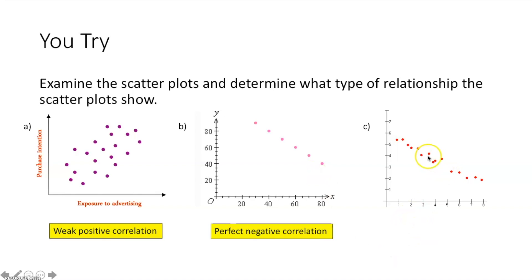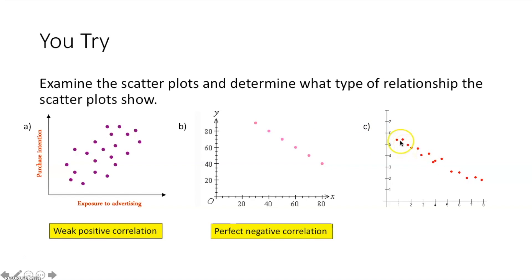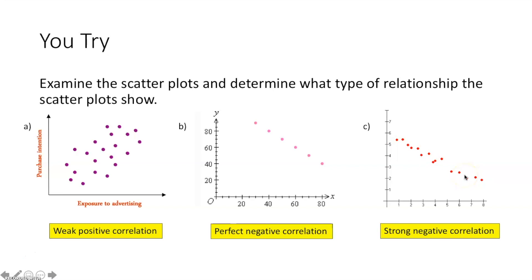For the last scatter plot, is it going up and to the right or down and to the right? The points are going down and to the right, so it's a negative correlation. Is it perfect, strong, or weak? They don't form an exact straight line like the previous one, but they're pretty bunched up together and somewhat close to a straight line — so this is a strong negative correlation.